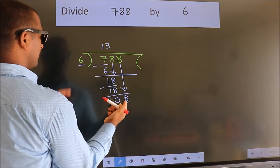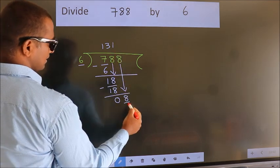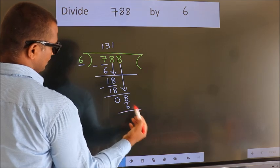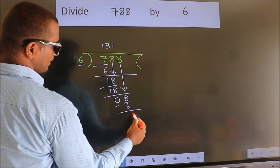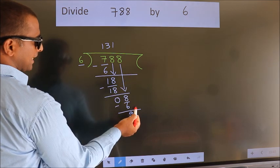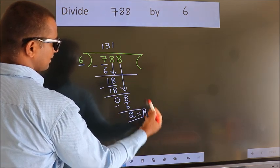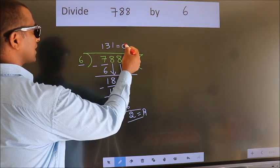A number close to 8 in the 6 table is 6 once 6. Now we subtract. We get 2. No more numbers to bring down. So we stop here. This is our remainder. This is our quotient.